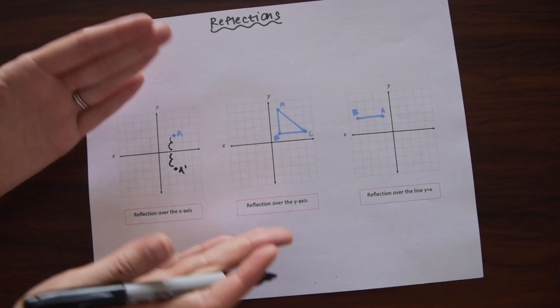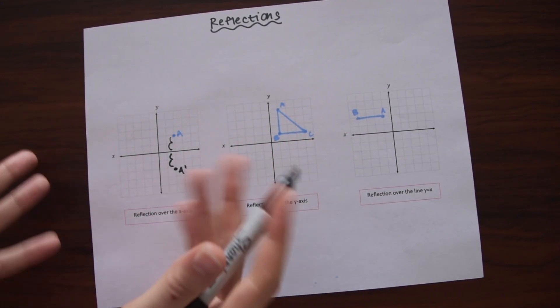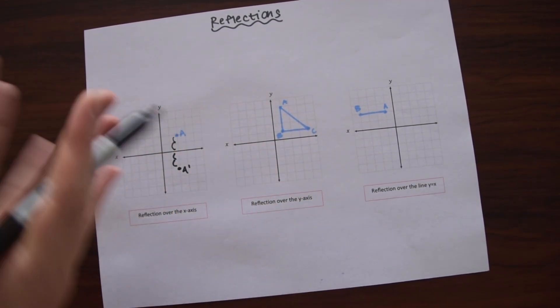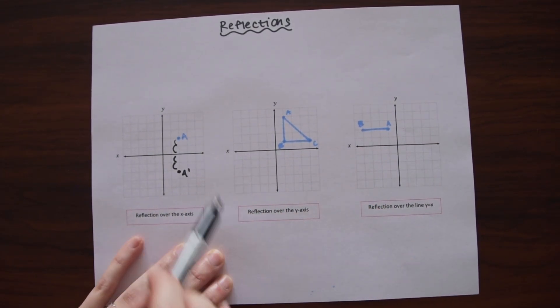So notice that we've folded this graph in half, this is a mirror image of itself, right? It falls exactly where the other point is. They match up if we were to fold it in half. So now let's look at our next example.